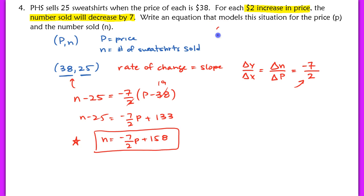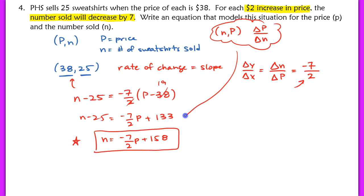One last thing to mention: if you had instead defined your ordered pair as N comma P, that would be okay. You would just need to use change in P over change in N, resulting in a different-looking function that would still give you the same outcome when you plug in specific values. On the answer key for your homework, both approaches are shown. It's up to you how to define your variables. Nice job — I will see you guys in class tomorrow.